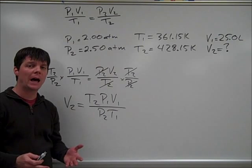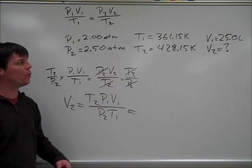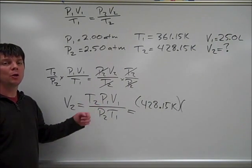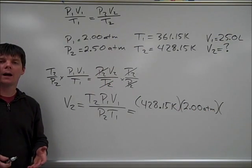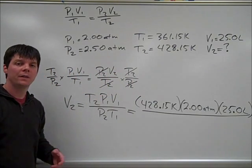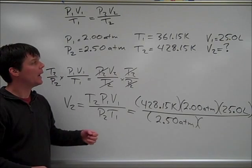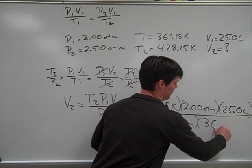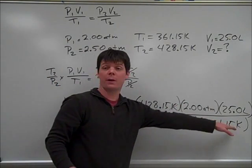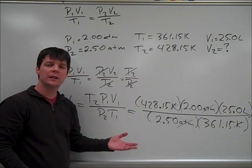The next step in our problem-solving strategy is to plug in the known variables, then solve and evaluate our answer. Earlier we had found that T2 was 428.15 Kelvin. We identified P1 as 2.00 atmospheres, and V1 was 25.0 liters. This is all divided by the ending pressure of 2.50 atmospheres and the initial temperature of 361.15 Kelvin. Let's check our units: Kelvin cancels with Kelvin, and atmospheres cancel with atmospheres, leaving a unit of liters.